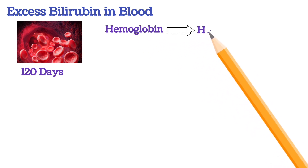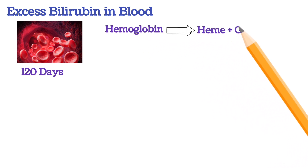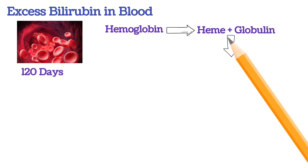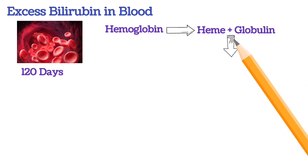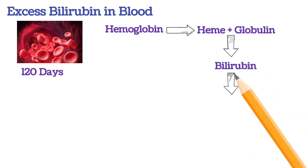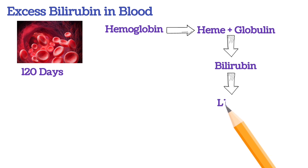this hemoglobin splits into heme as well as globin, and the heme gradually converts into bilirubin, which enters into the liver.